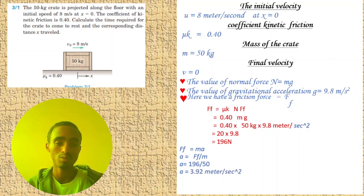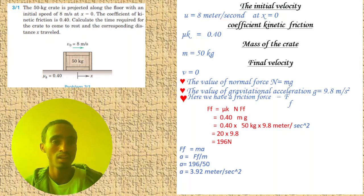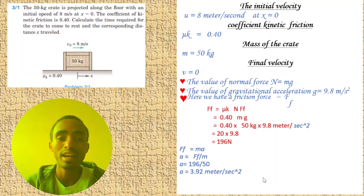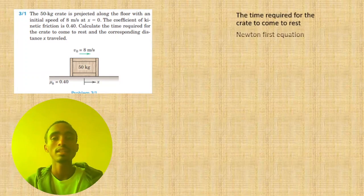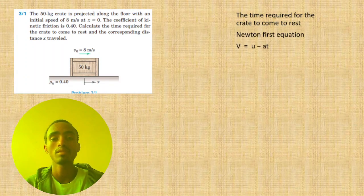After calculating acceleration, finding the time and distance is very simple because we know acceleration, initial velocity, and final velocity. Calculating distance and time is easy from kinematics. The time required for the crate to come to rest uses Newton's first equation of uniformly accelerated motion.